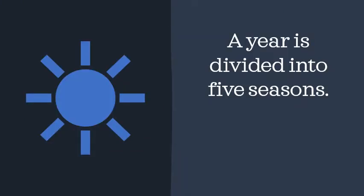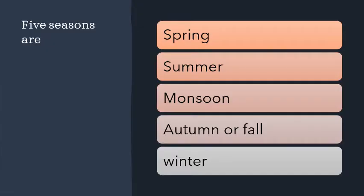A year can be divided into five seasons. From January to December, one year can be divided into five seasons. The five seasons are: Spring — S-P-R-I-N-G; Summer — S-U-M-M-E-R; Monsoon — M-O-N-S-O-O-N; Autumn or Fall — A-U-T-U-M-N, F-A-L-L; and Winter — W-I-N-T-E-R.